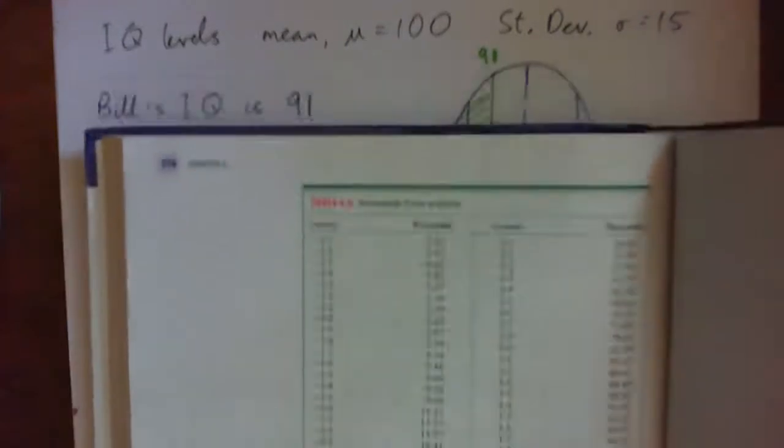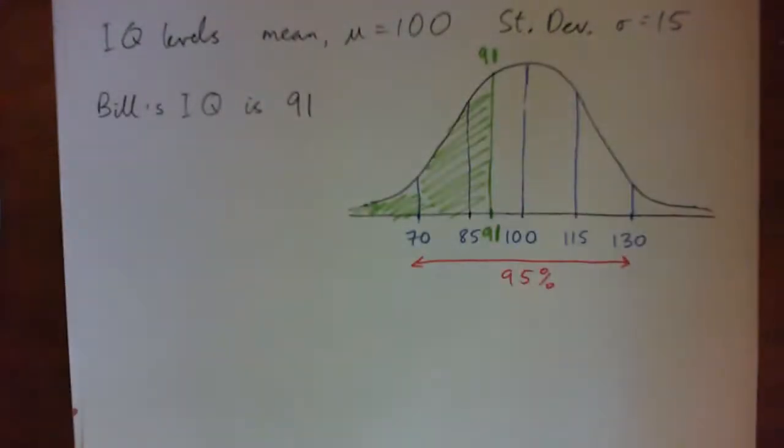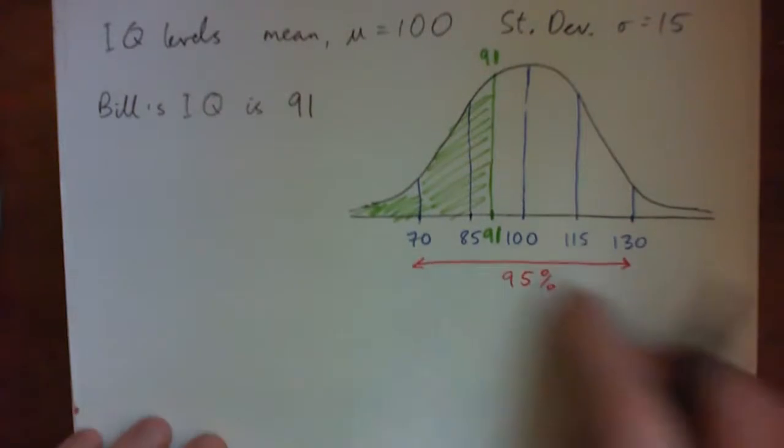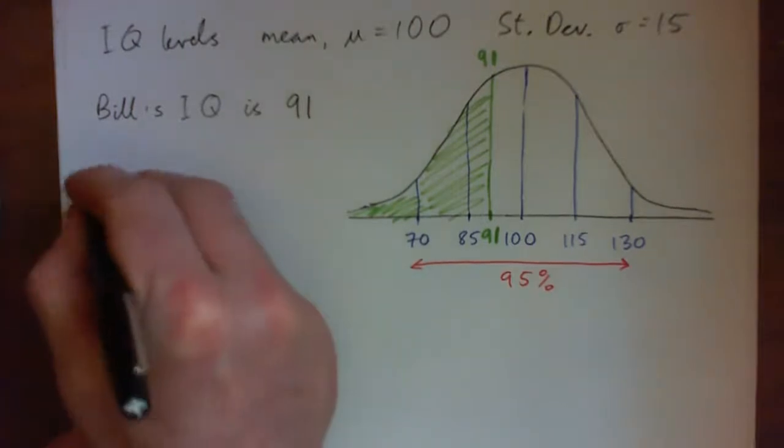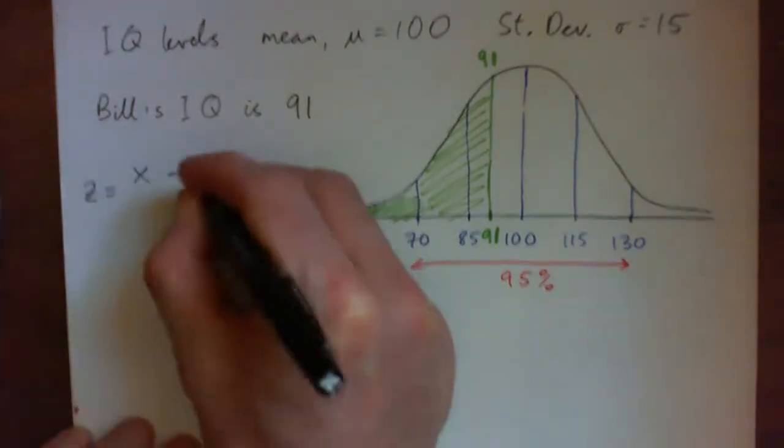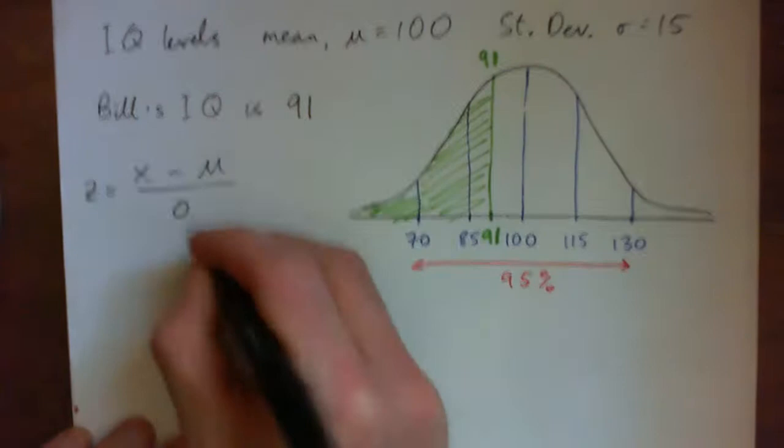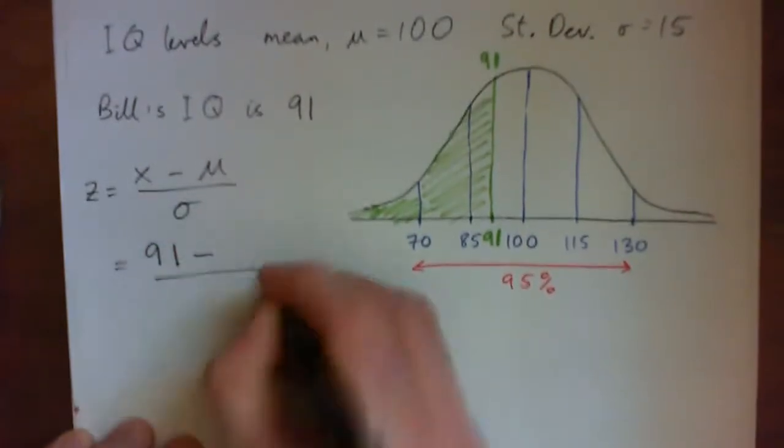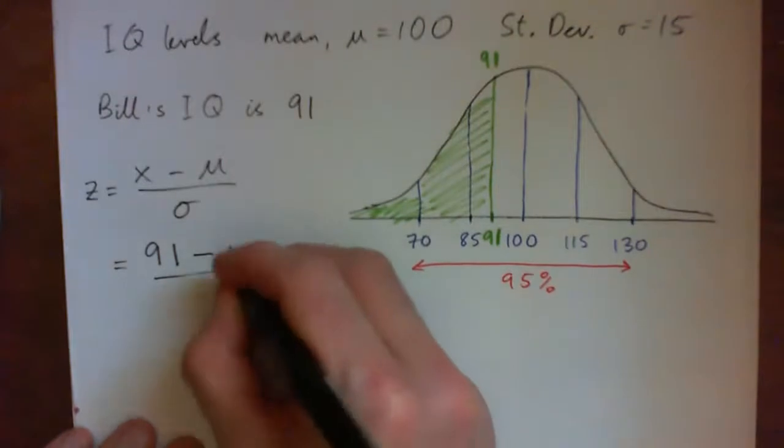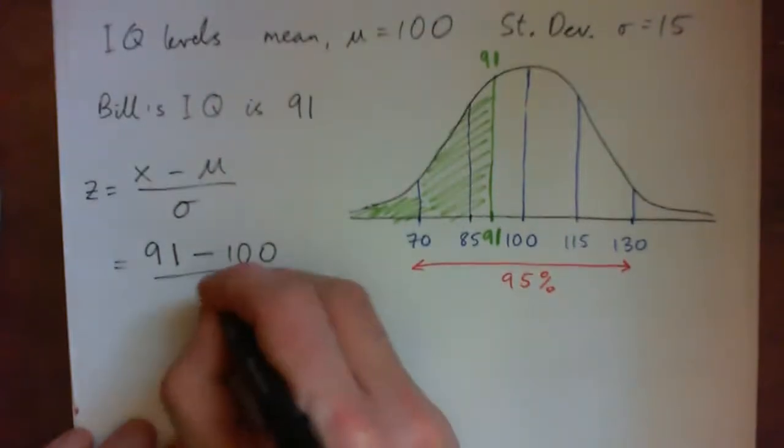But what we need to do, we're going to use that table, we've got to convert his score into the Z score. And the Z score just means how many standard deviations above or below the mean he's at. So the Z score is just X minus the mean over standard deviation. So we just go 91 minus the mean of 100 over standard deviation of 15, right?